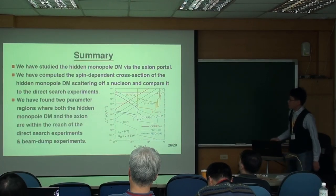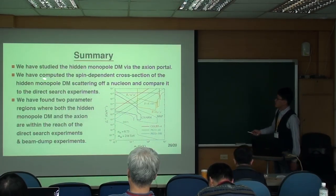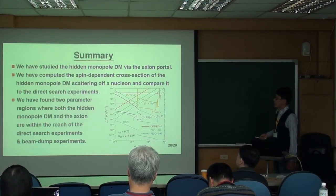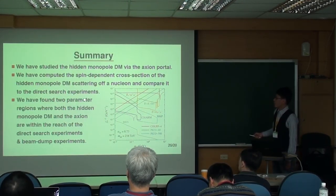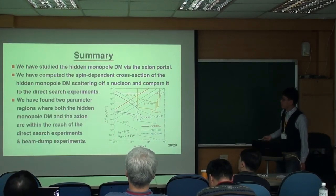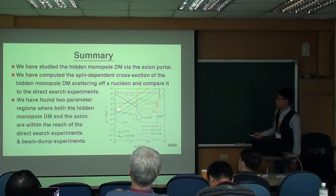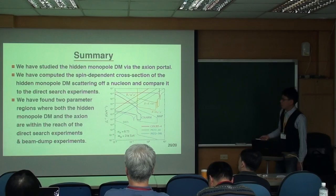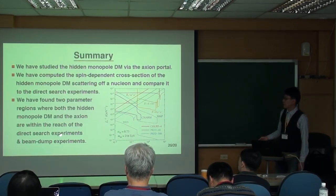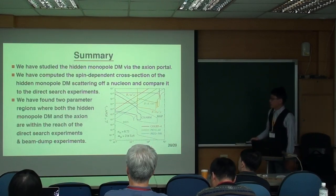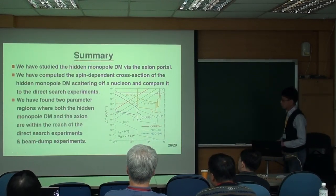So that's the summary of my talk today. We have studied the hidden monopole via the axion portal. And then we computed the spin-dependent cross section of the hidden monopole and compared with the experiments. We have found two parameter regions where both the hidden monopole and the axion are within the reach of the direct search experiments and the beam-dump experiments. Thank you so much.